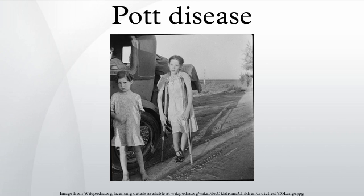But if two vertebrae are involved, the disc, which is avascular, cannot receive nutrients and collapses. The disc tissue dies and is broken down by caseation, leading to vertebral narrowing and eventually to vertebral collapse and spinal damage. A dry soft tissue mass often forms and super-infection is rare.